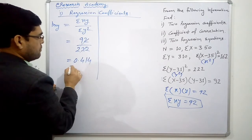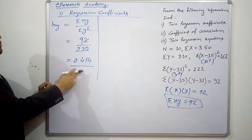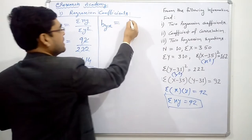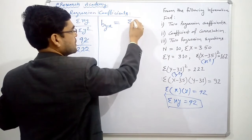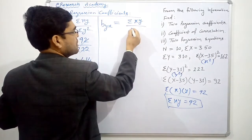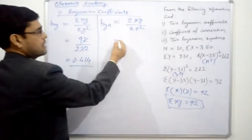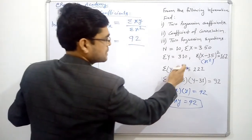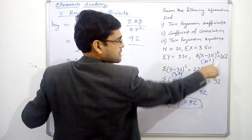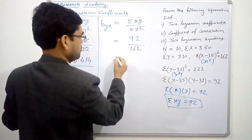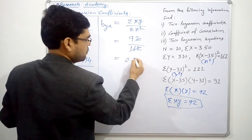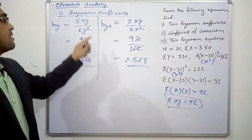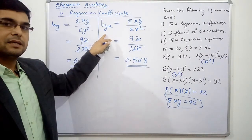So bxy = 0.414. Similarly, we need byx, which equals sigma xy upon sigma x squared. Sigma xy is again 92, but sigma x squared is 162. Solving this gives us byx = 0.568. So these are our two regression coefficients: bxy = 0.414 and byx = 0.568, which we will need to estimate our two regression equations.